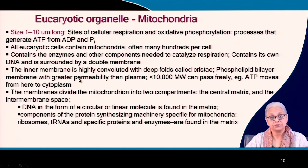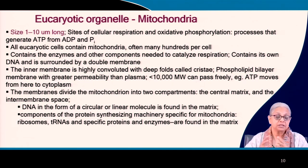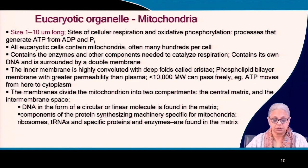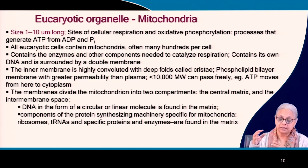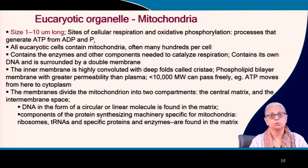The phospholipid bilayer membrane has higher permeability than the plasma membrane. Molecules less than 10,000 molecular weight can pass in and out freely, and ATP has to move in and out of the mitochondrial cytoplasm. The membranes divide the mitochondrion into two compartments: the central matrix and the intermembrane space. The central matrix has its own DNA — another argument in favor of the endosymbiotic theory — and contains components of the protein synthesizing machinery specific for the mitochondria: its own ribosomes, transfer RNAs, and specific proteins and enzymes. These are all arguments provided in favor of the endosymbiotic theory.